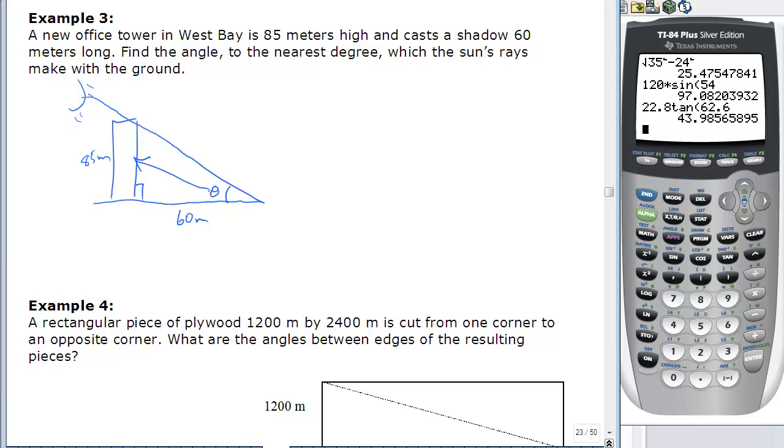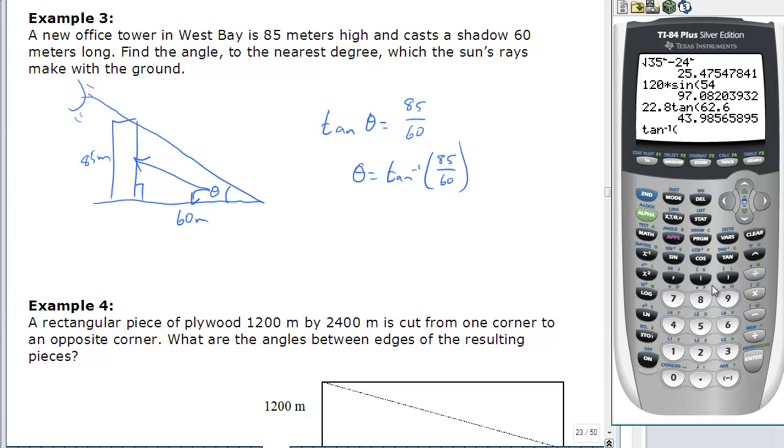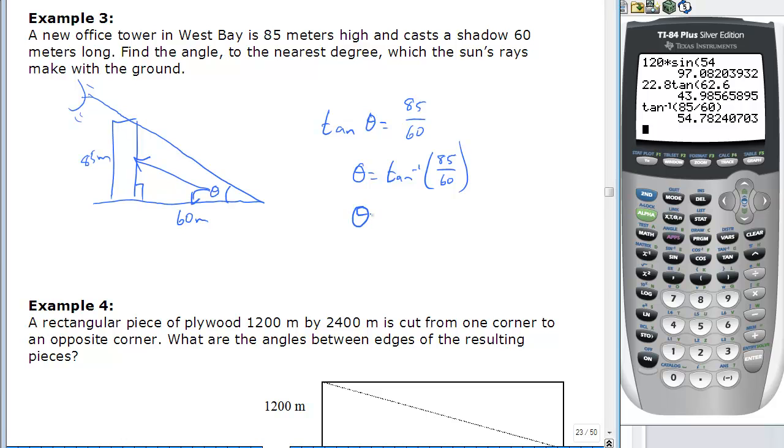Opposite and adjacent, so right away you're thinking tan. Tan theta is opposite over adjacent. Theta then is shift tan or tan inverse of 85 over 60. So second function tan gives us tan inverse of 85 over 60, and that tells us that the angle the sun makes with the ground equals 55 degrees, rounded to the nearest degree as instructed.